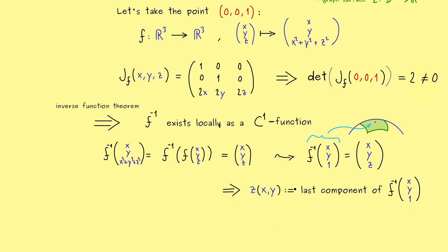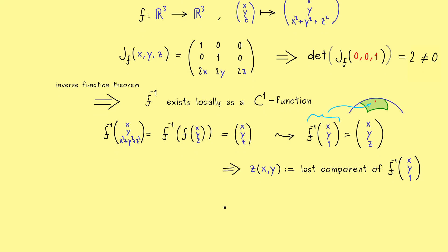But still, sometimes knowing the existence of such a function can already be helpful. Now, for this example here you could argue that the whole thing was not necessary at all, because we already know this inverse function. In this case it's simply given by the square root of 1 minus x² minus y².